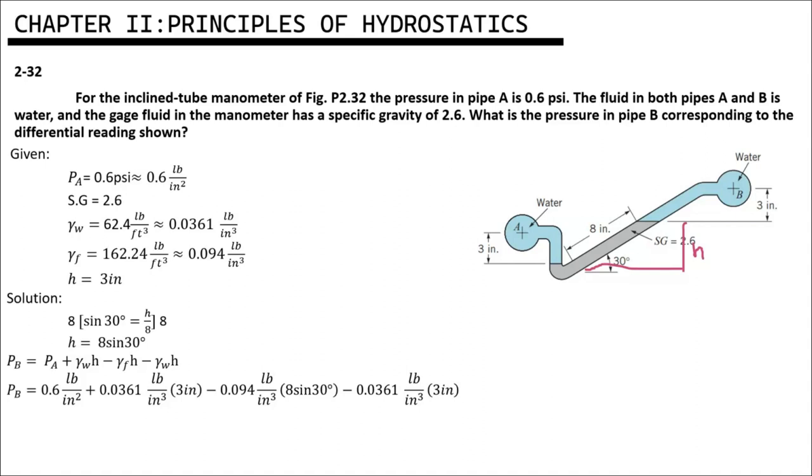Since we are going to solve for H, sine 30° equals opposite over hypotenuse. We must multiply this side by 8 and this side by 8.